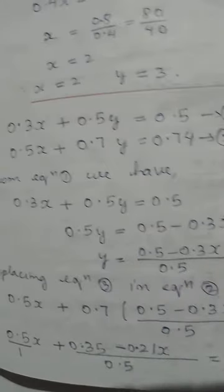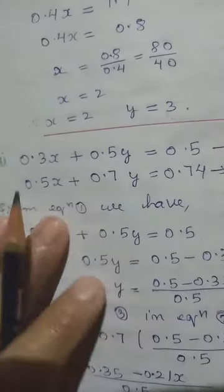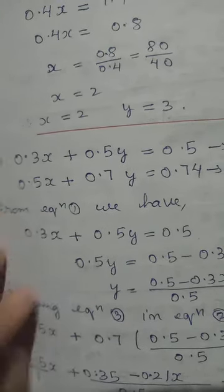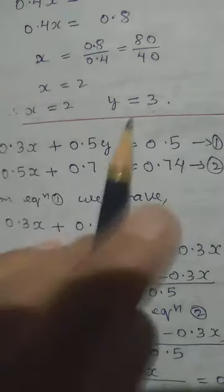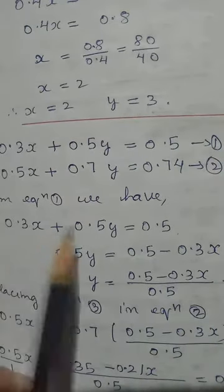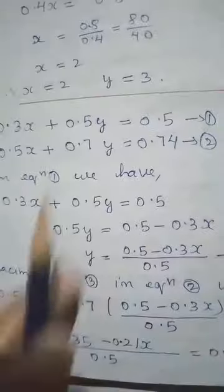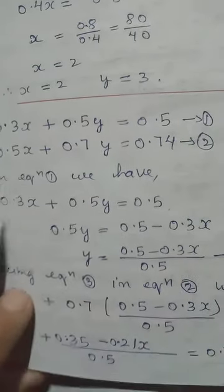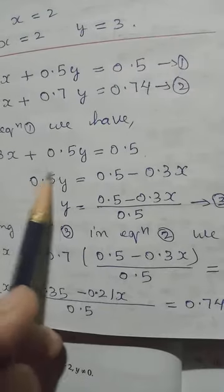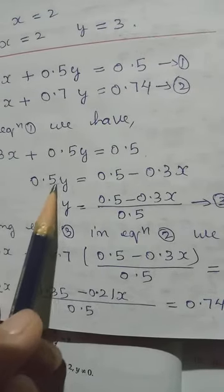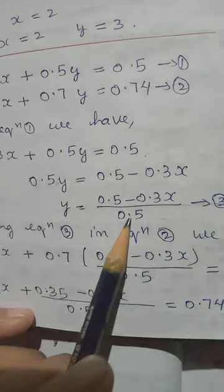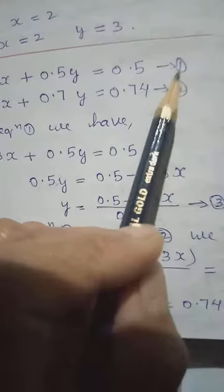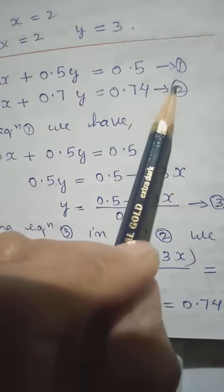Then we will go on to question number 2. Here also you can do the same, but I will do it with another method known as substitution. So let me start from equation 1. We need to separate X and Y. So we leave Y here. X is plus; if I take it aside, it becomes minus. So it is better to leave only Y here, with 0.5 as the number with X. We can bring down or divide. So we name this as equation 3.